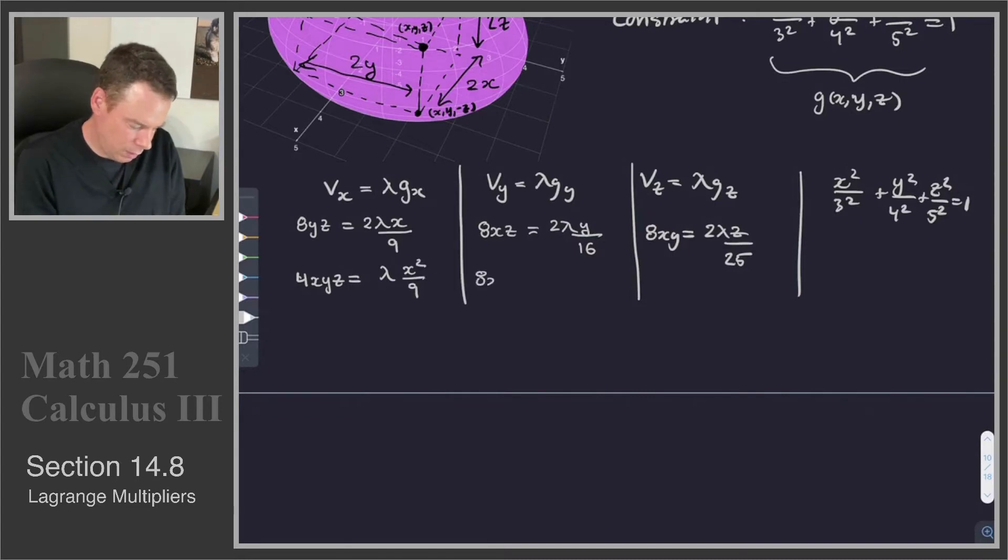I get 8xyz, so I'm multiplying this one through by y, and I'm going to divide by 2 as well. So I get 4xyz = λy²/16. And the last one I'll multiply through by z, and so I get 4xyz = λz²/25.